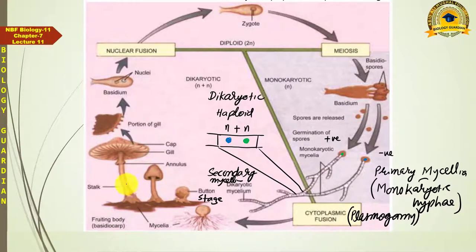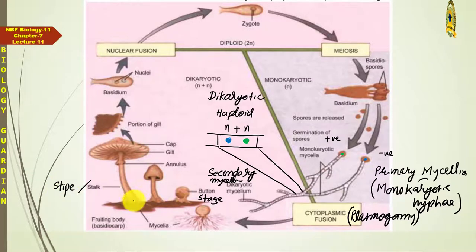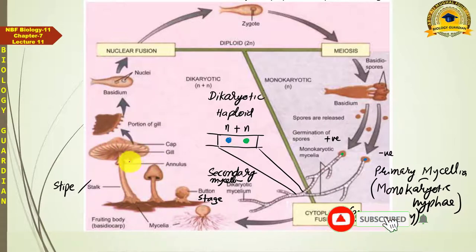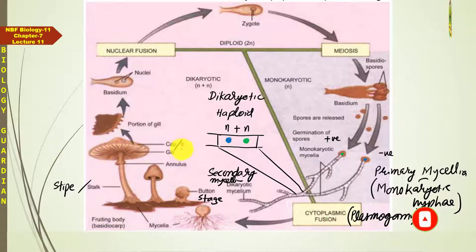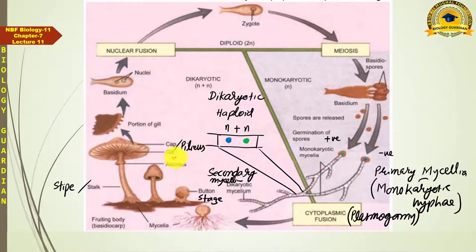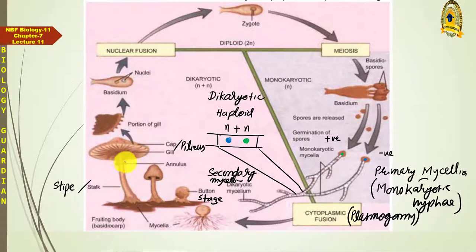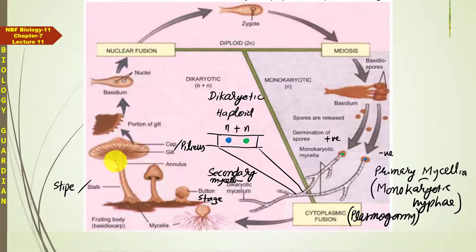This stem-like structure is called stipe. On the very tip of this stipe, an umbrella-like cap is visible — this umbrella-like cap is called pileus. And below the pileus, around the stipe, a collar is visible with a fringe hanging around it — this is called annulus.